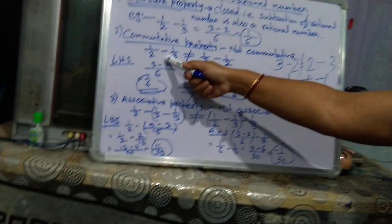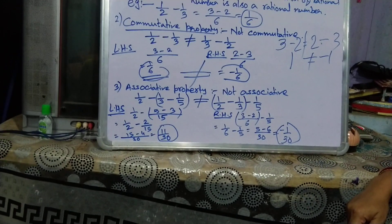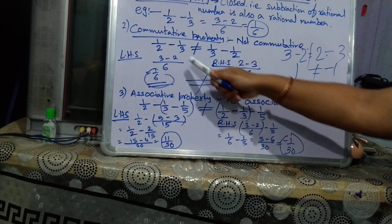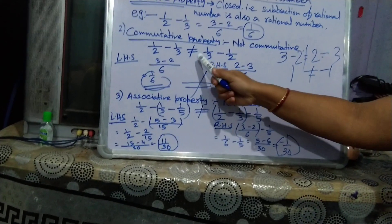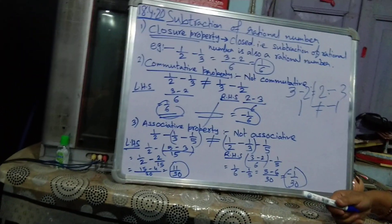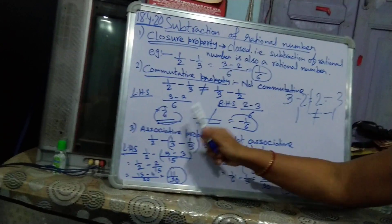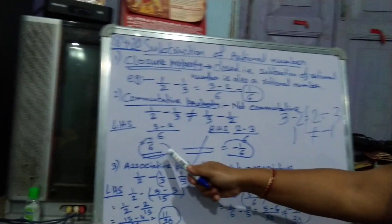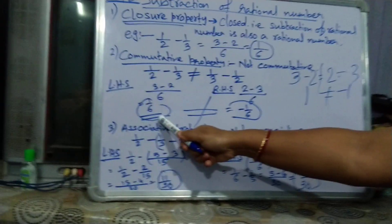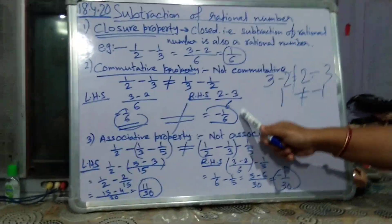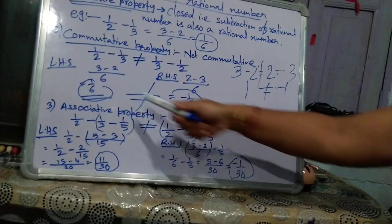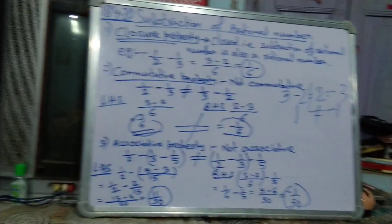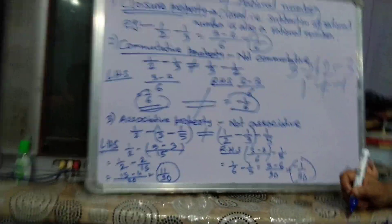Similarly, if we take rational number fractions: 1/2 minus 1/3 is not equal to 1/3 minus 1/2. Because if we do LHS and RHS separately, LHS gives 1/6 and RHS gives minus 1/6. So they are not equal. That means subtraction is not commutative.